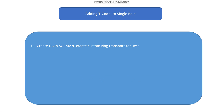Create a defect correction in Solman and create a customizing transport request. If in your project some other tools are there like Charm, you can use Charm or any other customized tool. The intention is to create the customizing transport request if you are going to add a T-code to the single role.